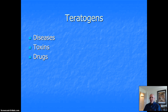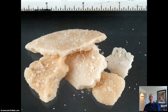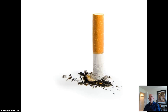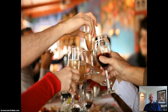It's this third subtype of teratogens — drugs — that I want to make some remarks over, because they can be especially dangerous. Heroin, cocaine, crack, and even cigarette smoking can all lead to premature delivery with low birth weight, birth defects, fetal death, and outright miscarriage. But the teratogen that we know more about than any other is alcohol.